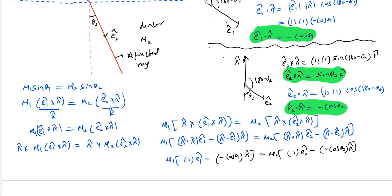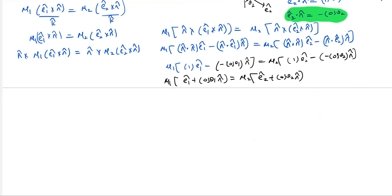Applying n̂ · Ê₂ = −cos θ₂, we get further simplification. This becomes: μ₁ (Ê₁ + cos θ₁ n̂) = μ₂ (Ê₂ + cos θ₂ n̂). Rearranging all in terms of unit vectors: μ₁ Ê₁ − μ₂ Ê₂ = μ₂ cos θ₂ n̂ − μ₁ cos θ₁ n̂. This is the vector form of Snell's law.